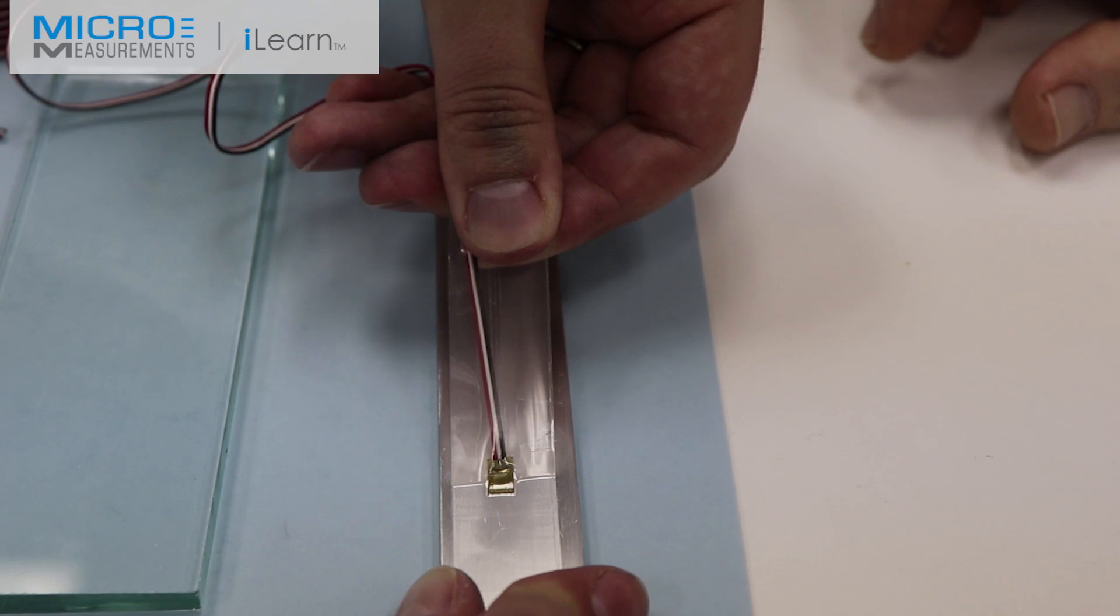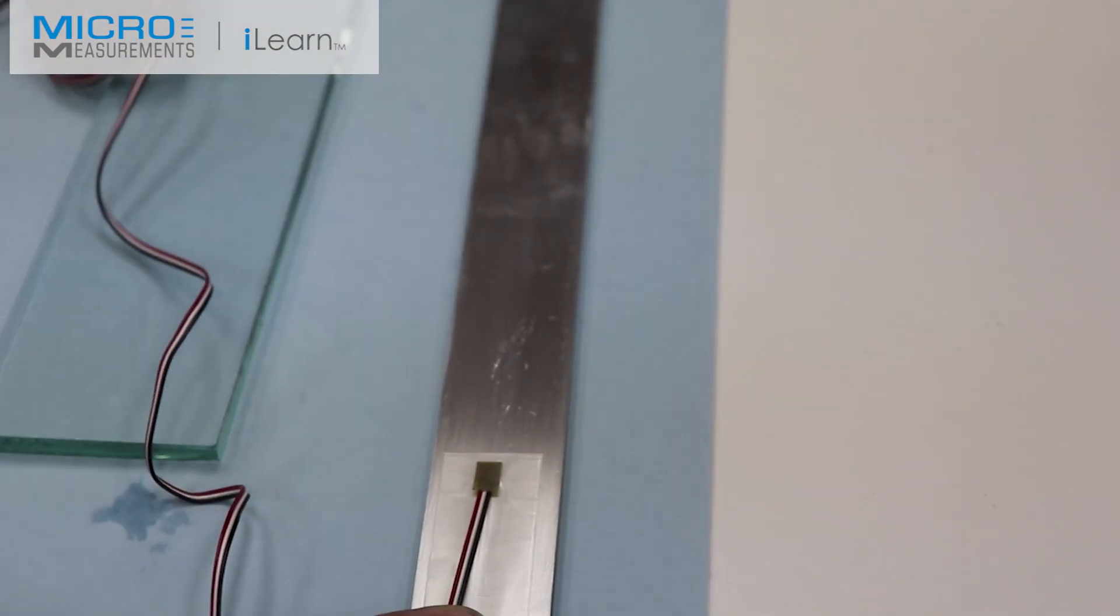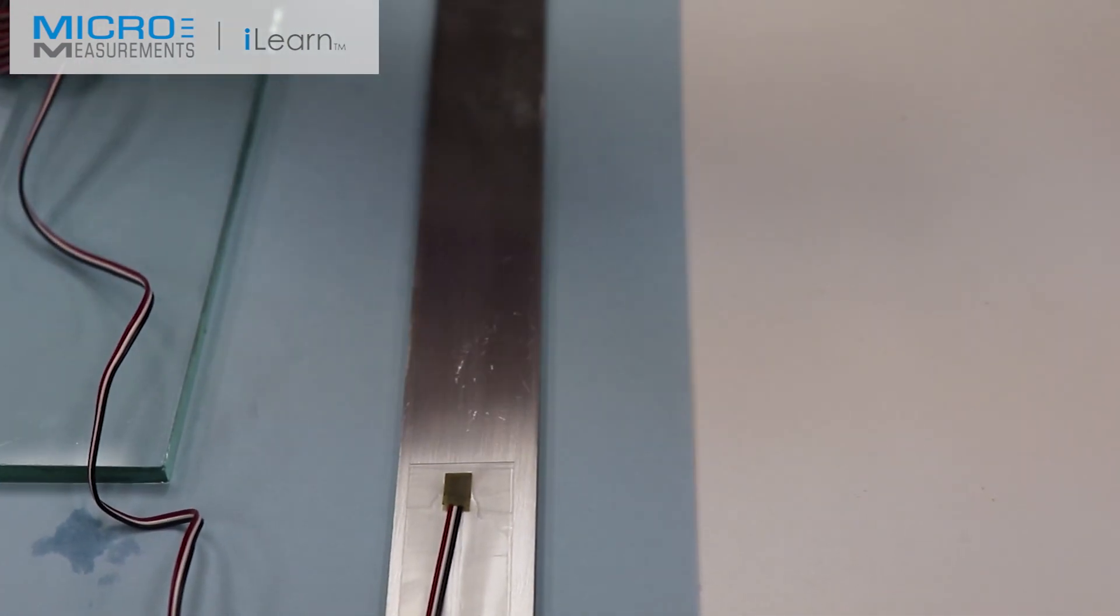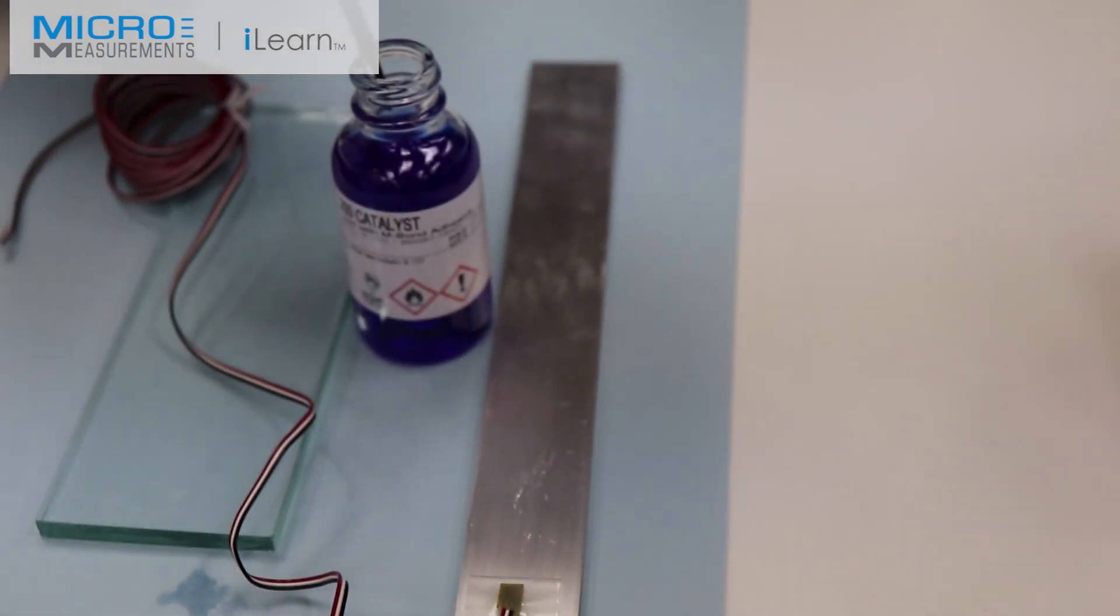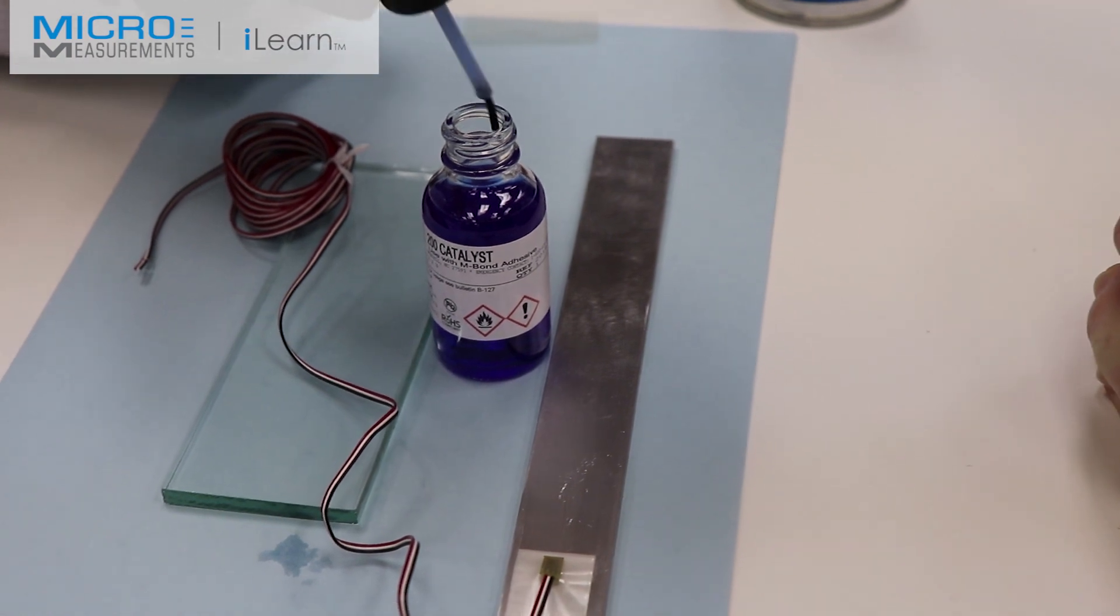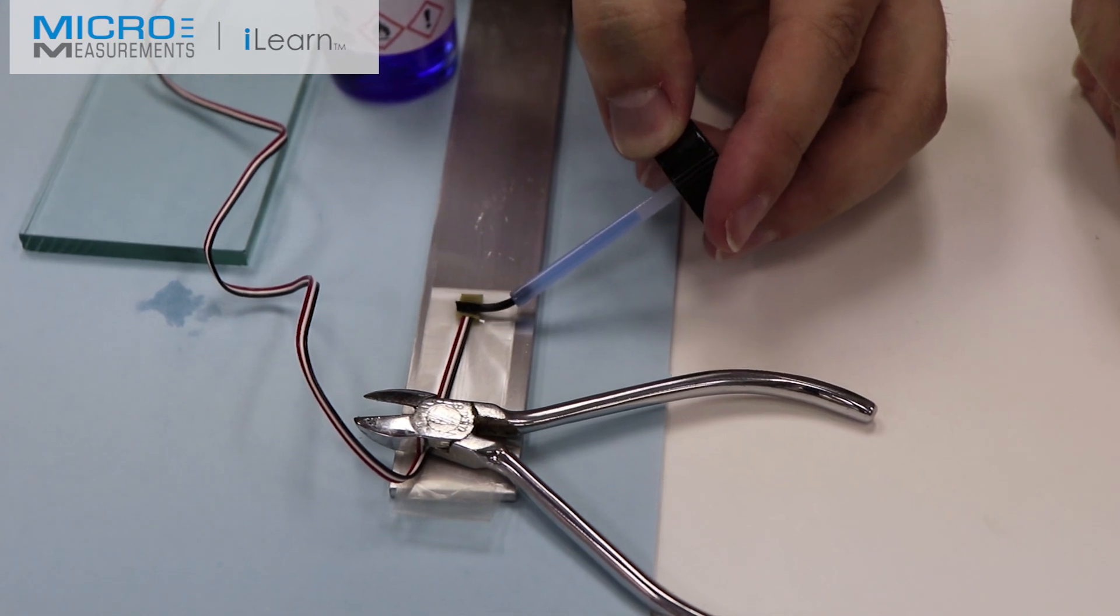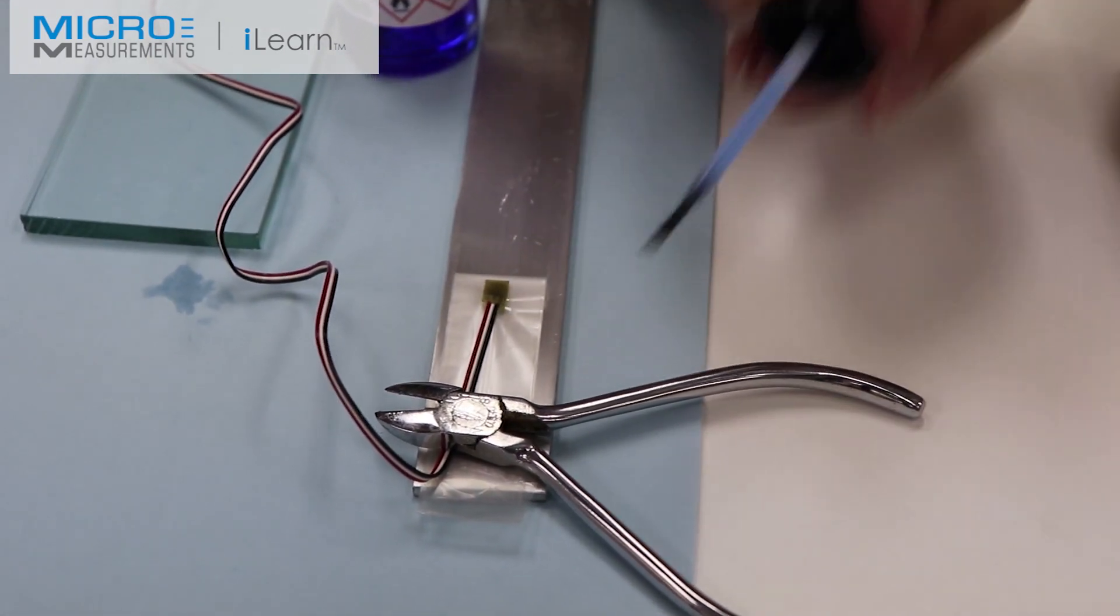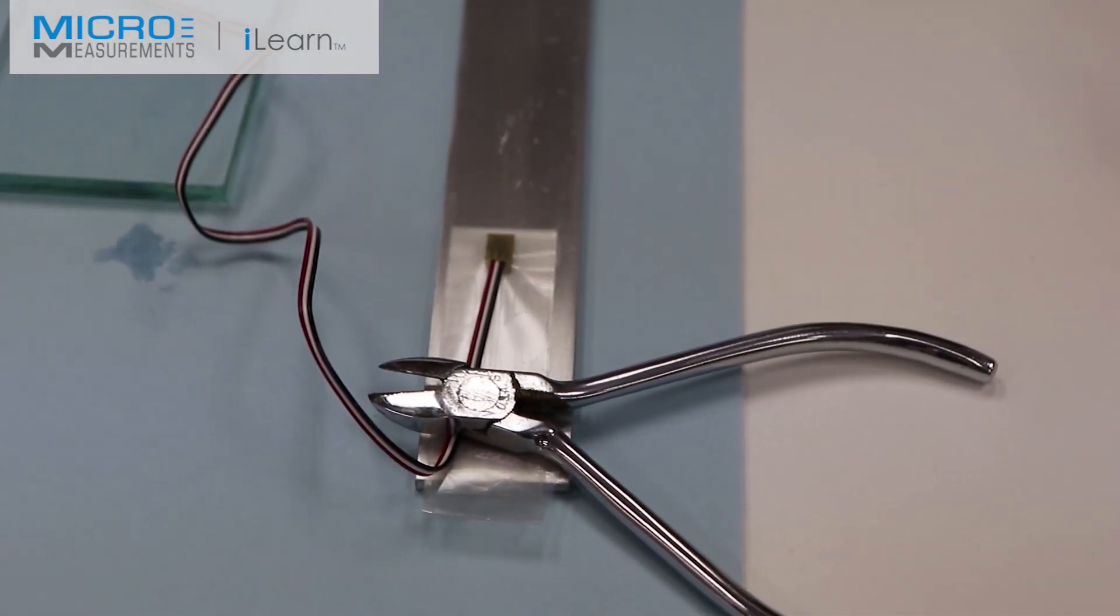And then he's going to use the Catalyst C. He'll hit the brush on the inside of the neck of the bottle at least eight to ten times, removing almost all of the material. And with a squeegee motion, he'll just squeegee it across the gauge, wetting that surface with the Catalyst C. And then we wait one minute of air dry time.